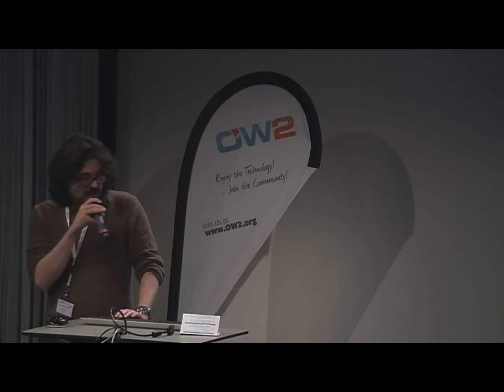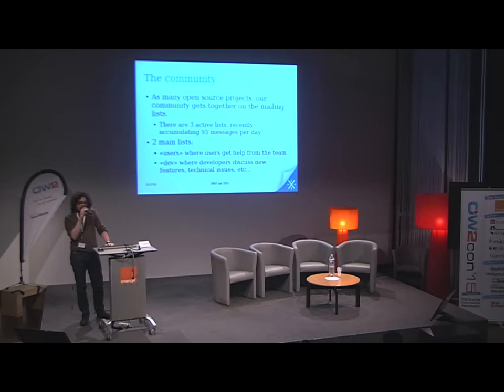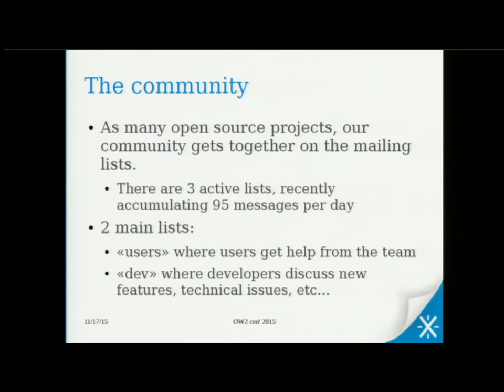Now, the community. xWiki.org is an open source project licensed under LGPL, and it's driven by its community — that's the most important thing. As with many open source projects, our community gets together on mailing lists. We have three active lists with many messages per day: the users list, where users can get help from the team, and the dev list, where developers discuss new features or technical issues. All decisions are made on these mailing lists.